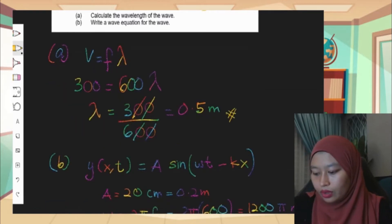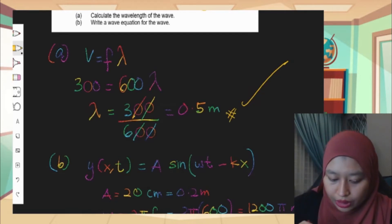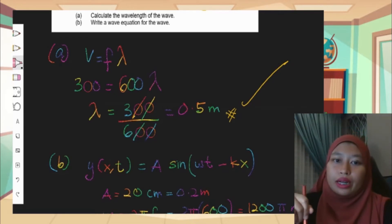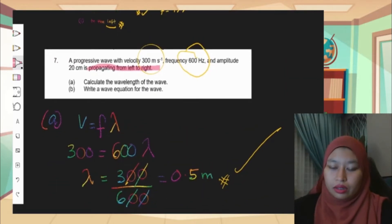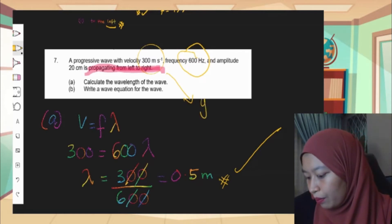For 7b, write a wave equation for the wave. We have keywords in the question. The keyword here is propagating from left to right. Let's see what I'm highlighting here - propagating from left to right is the keyword.